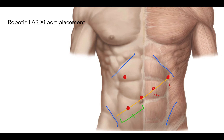So the trajectory of the ports will look something like this: port 1, port 2, port 3, port 4 slash stapler — with number 3 being my camera. This is typically my configuration, and in fact this is my universal port configuration for nearly every single robotic case I do, whether it's an LAR, an APR, a right colectomy, a transverse colectomy, or a subtotal colectomy.